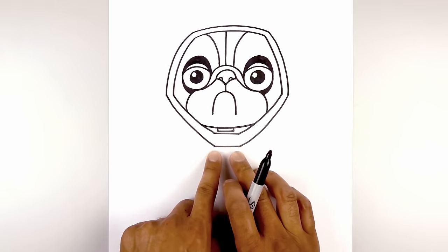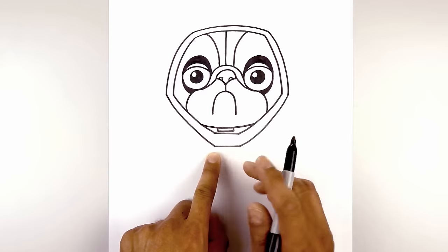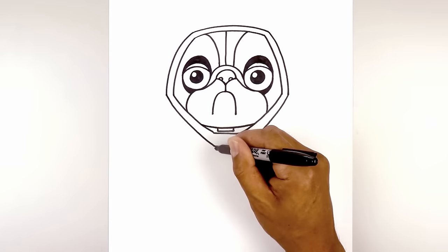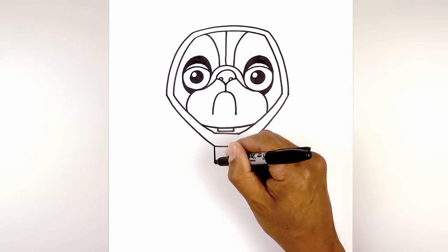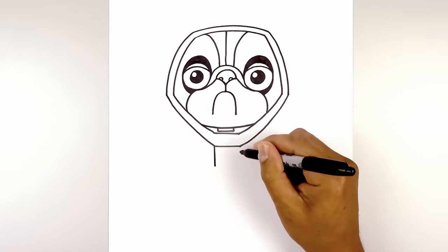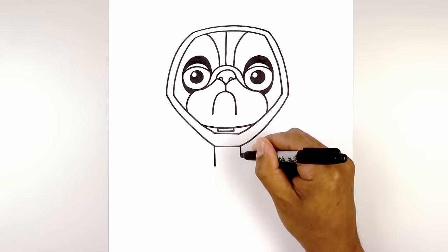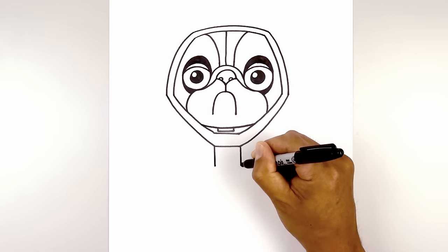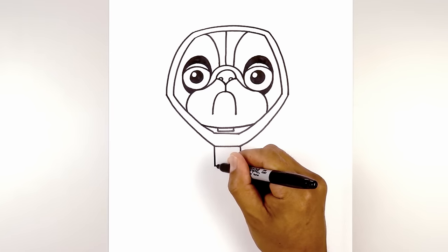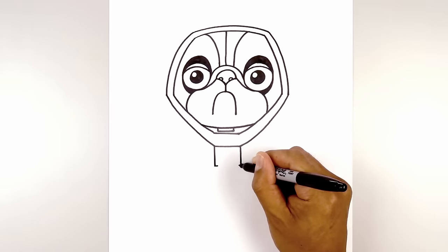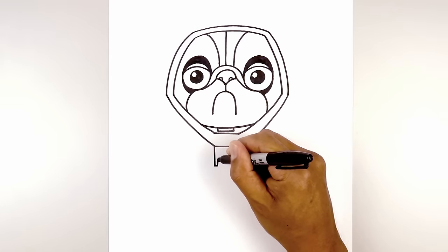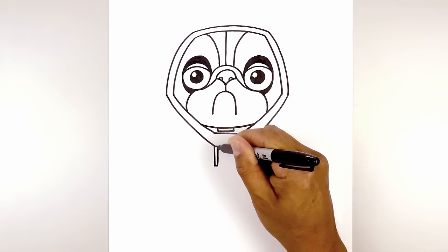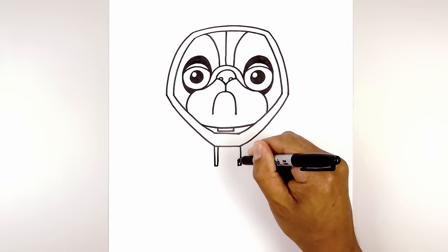Let's add two drawstrings on either side. Starting from the bottom point on the left, draw a straight line coming down. Do the same thing on the right. Now close off the bottom with a short line, then pull this back up underneath the hood.